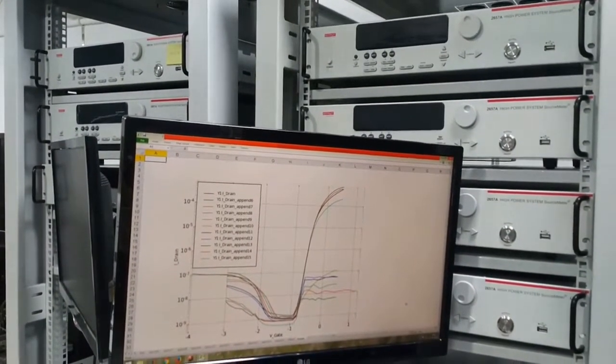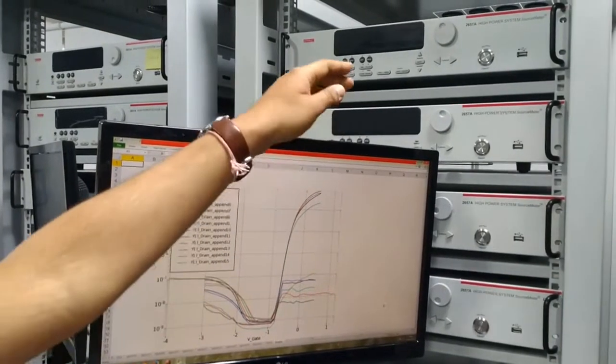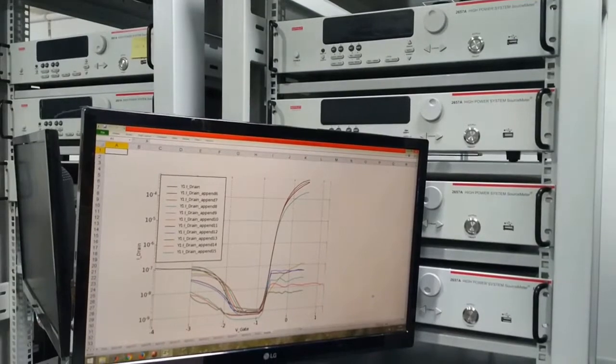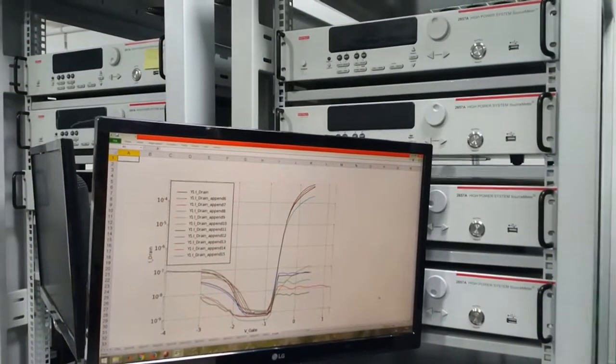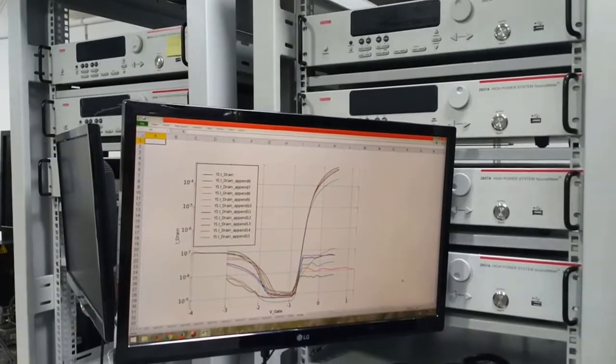For example, we can carry out measurements under moderate power regime and also high power regime. In the moderate power regime, we can go up to 200 volts on the voltage scale, and measure up to 10 amperes on the higher side and down to 0.1 femto amperes on the lower side.